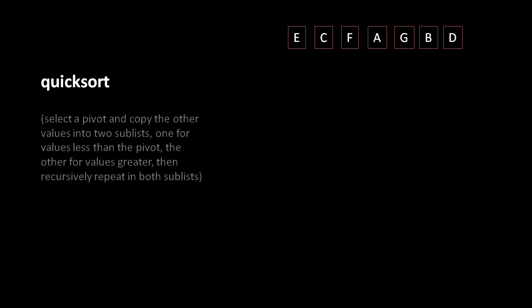Like merge sort, quick sort is a recursive divide-and-conquer process. In this algorithm, we split the list into two by selecting a so-called pivot value, which can be any random value from the list, and then filing the remaining elements into two sublists — one for the values less than the pivot, the other for values greater. We then recursively repeat this process for both of those sublists.